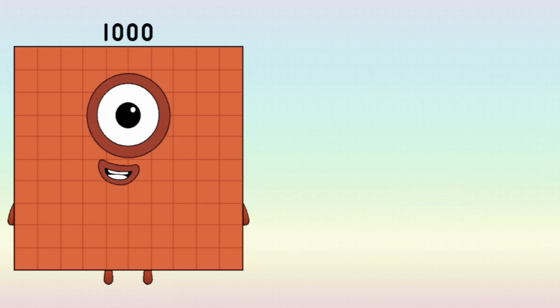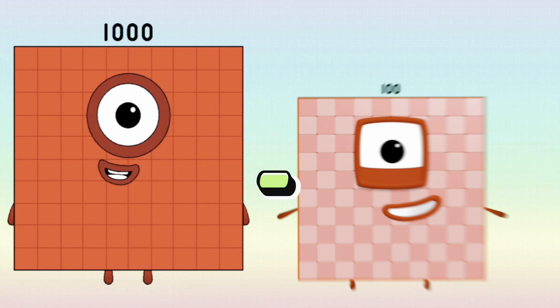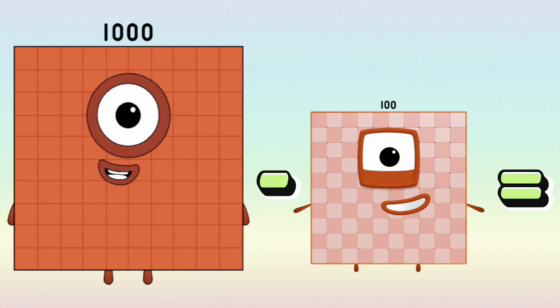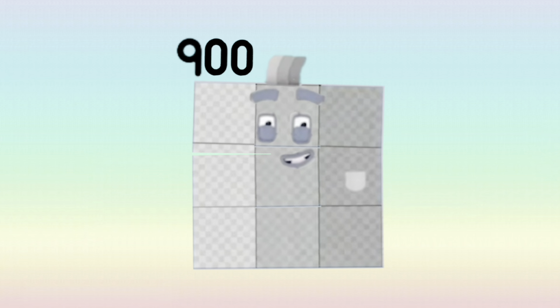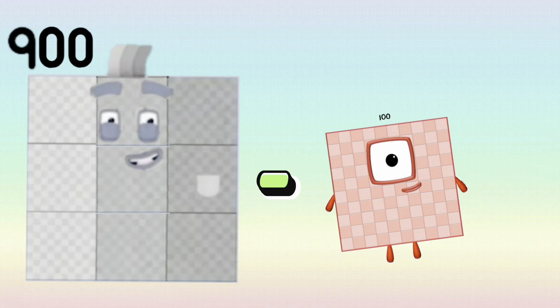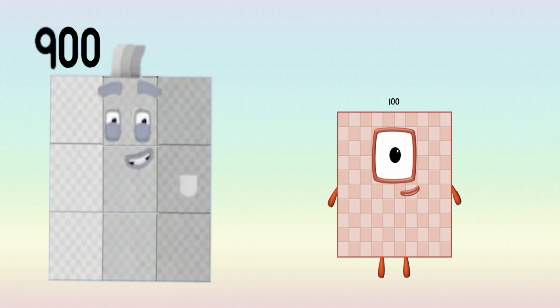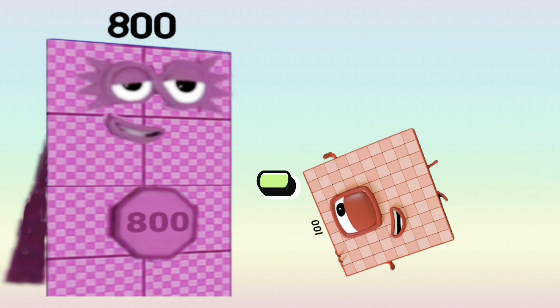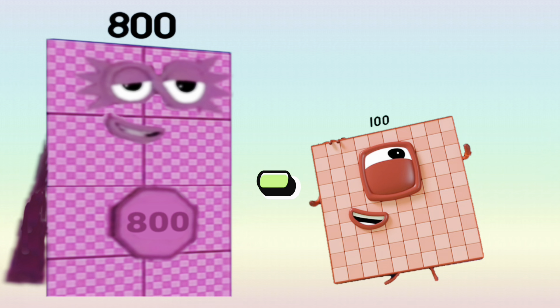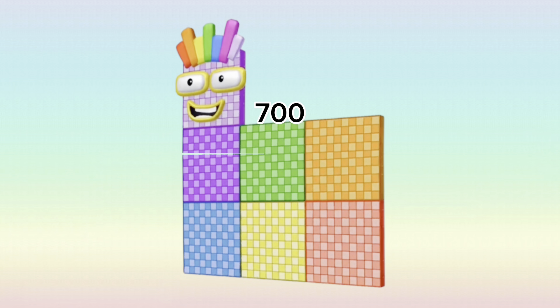1,000 minus 100 is equals to 900. 900 minus 100 is equals to 800. 800 minus 100 is equals to 700.